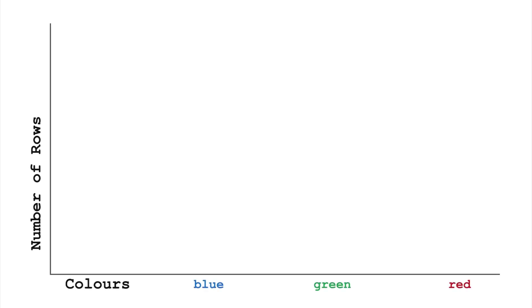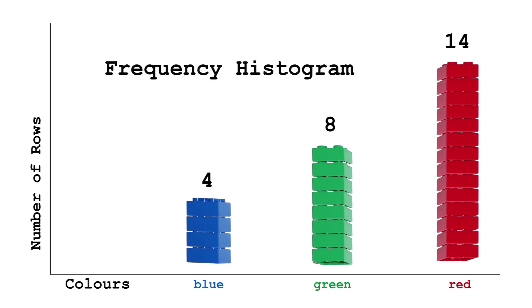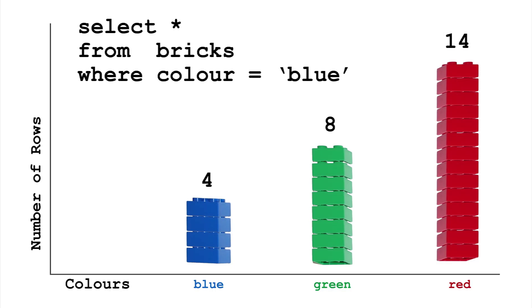To fix this, we can store the number of bricks for each color. This gives a frequency histogram. Each value is stored in what's called a bucket. Provided the stats are up to date, this gives us a very accurate estimate of how many rows our query will return when searching for any of these colors. Also, if we search for a color we don't have, say pink, we can see no buckets store this value, and infer we'll get few rows.